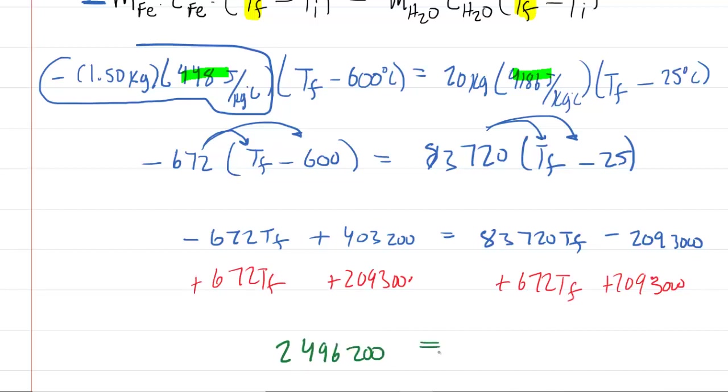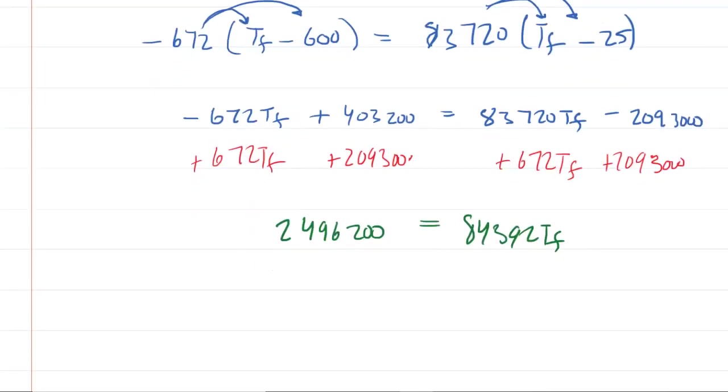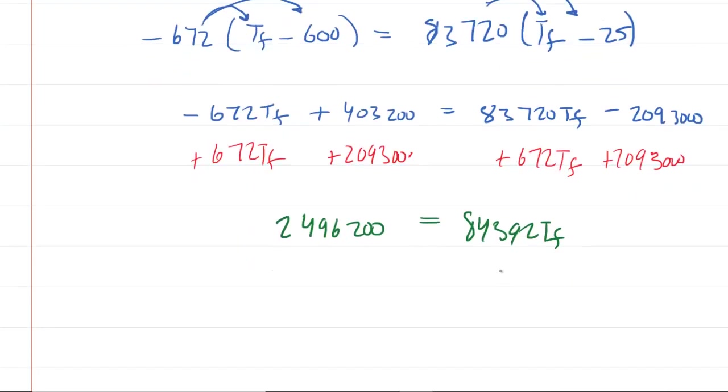And then the right-hand side, if we add the 83,720 plus the 672, we're going to get 84,392 times the final temperature. And then simply divide both sides of the equation by the 84,392. And when you do this, you will get the final temperature value of 29.6 degrees Celsius. So this will be the final temperature of this system of iron in contact with water.